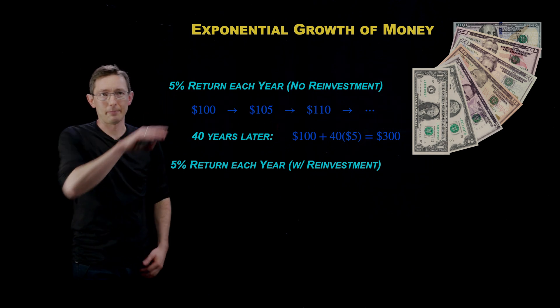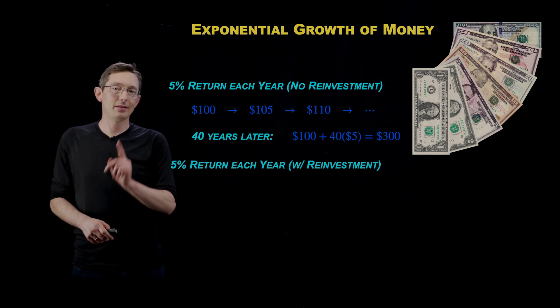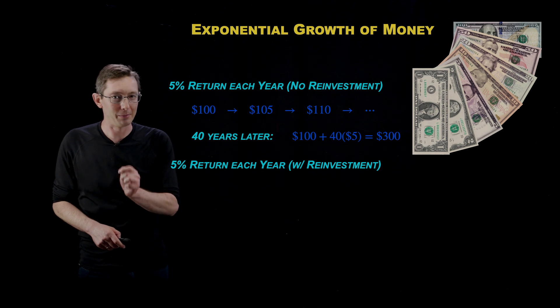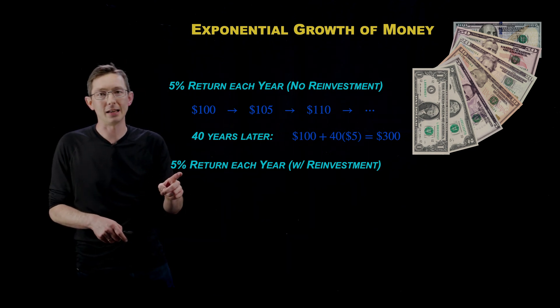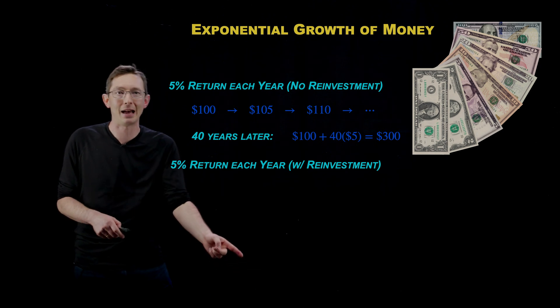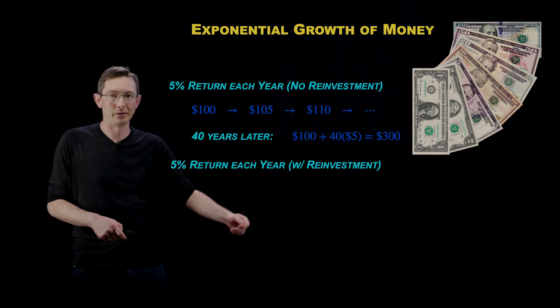This is not reinvesting. There's no compound growth here. But if you reinvest that $5 you make every year, something magical happens. So now we're going to take the same bank, but every time we get $5, we're going to put that back in the bank and it's going to compound interest.